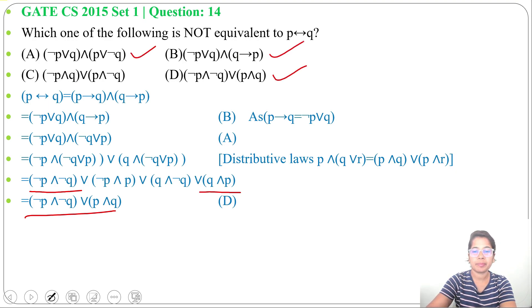So option A, option B, and option D are equivalent to P double implication Q, while option C is not equivalent. As here we found negation P and negation Q or P and Q, but here it's given negation P and Q or P and negation Q. Both are not equivalent. So answer is option C.